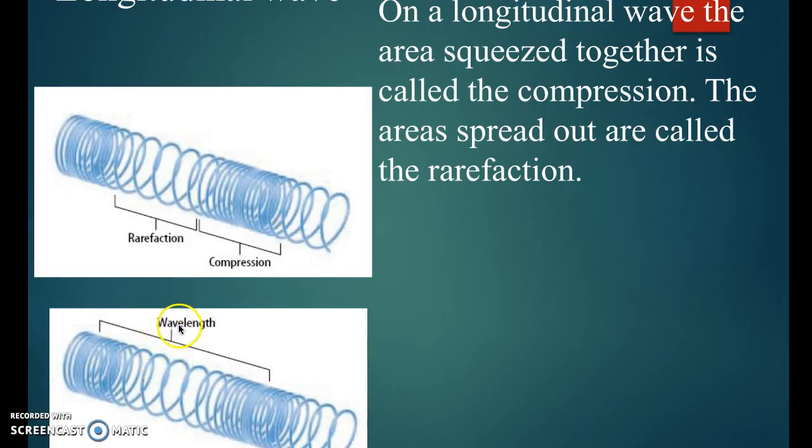One property that we talked about with transverse waves that's a little tricky here is amplitude. Amplitude here is not the distance between these and these, because distance, we just said, is like this distance along the spring is the wavelength.